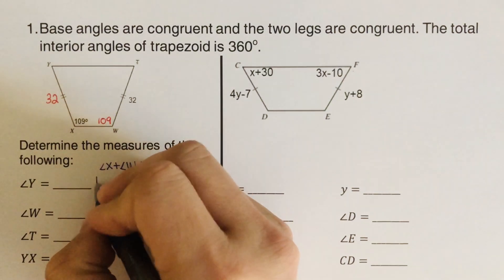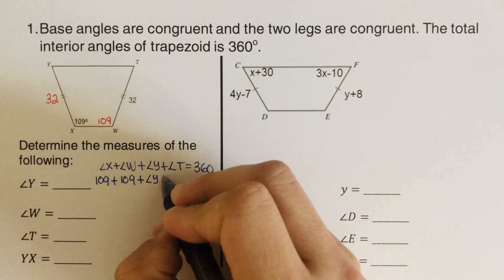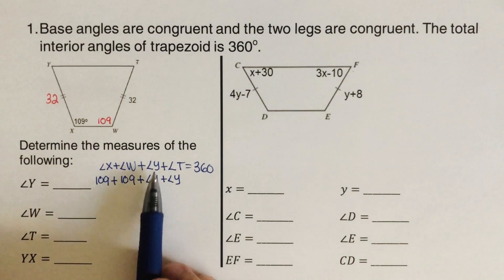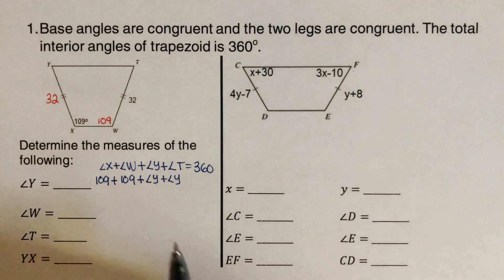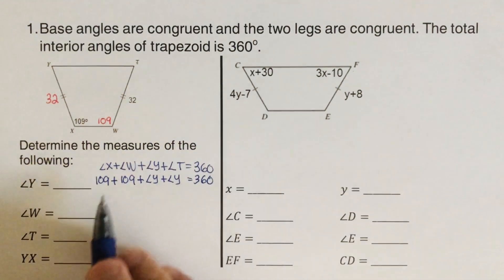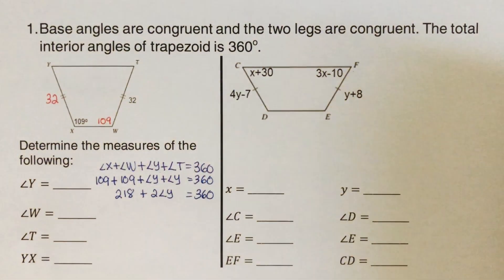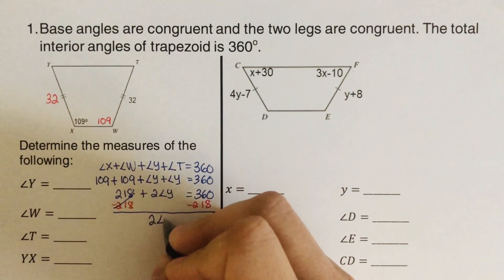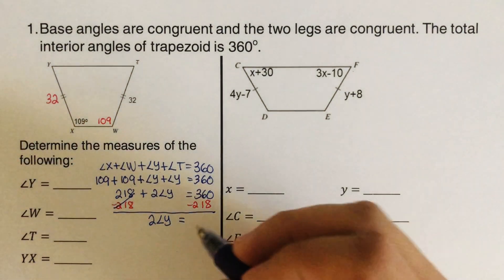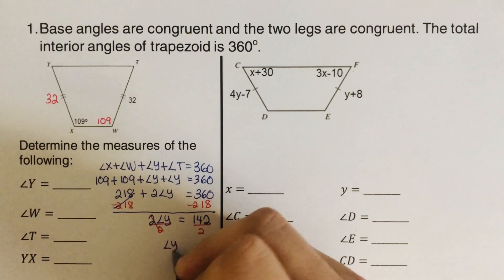We have 109 plus 109 plus angle Y plus angle Y equals 360. Since angle Y and angle T are congruent, we name both as angle Y. Adding 109 and 109 gives 218, so 218 plus 2·angle Y equals 360. Subtracting 218 from both sides gives 2·angle Y equals 142. Dividing both sides by 2, angle Y equals 71 degrees.